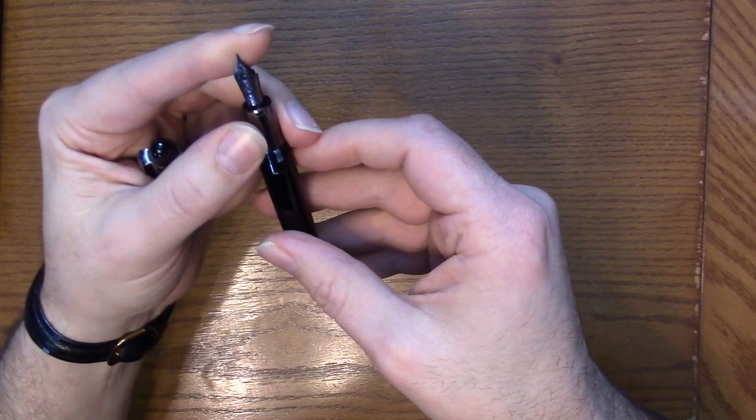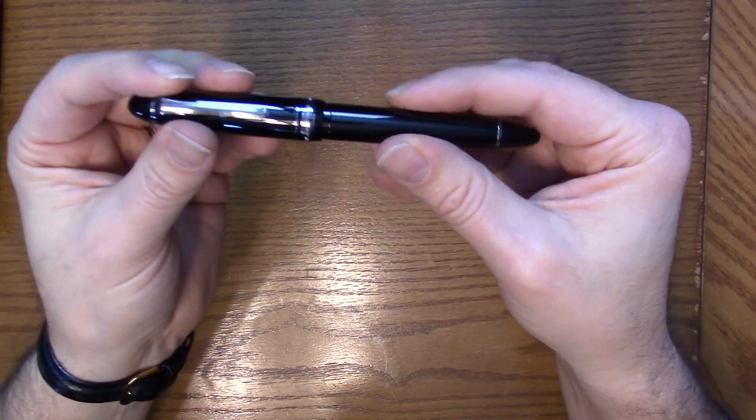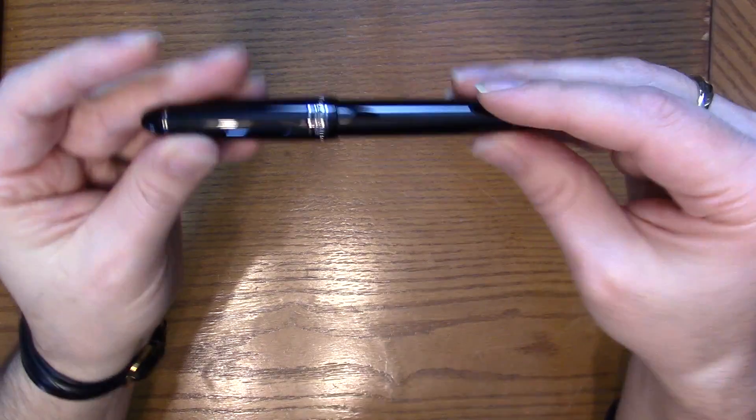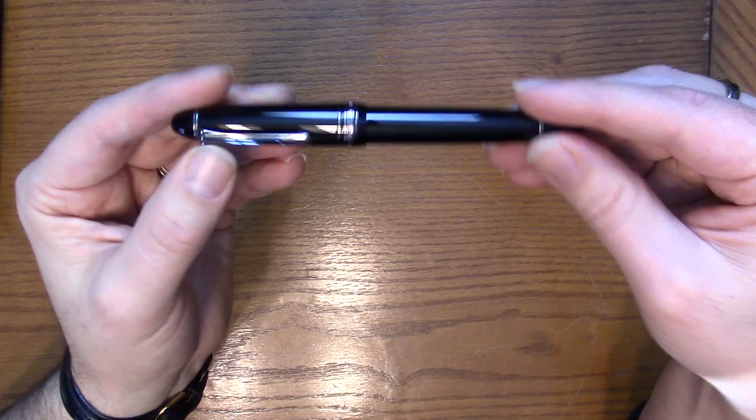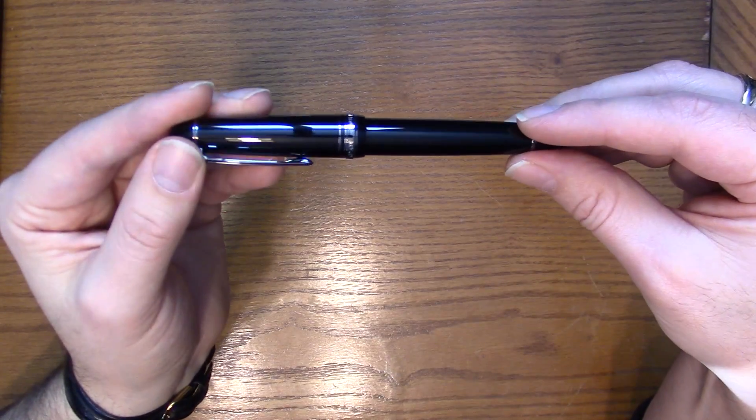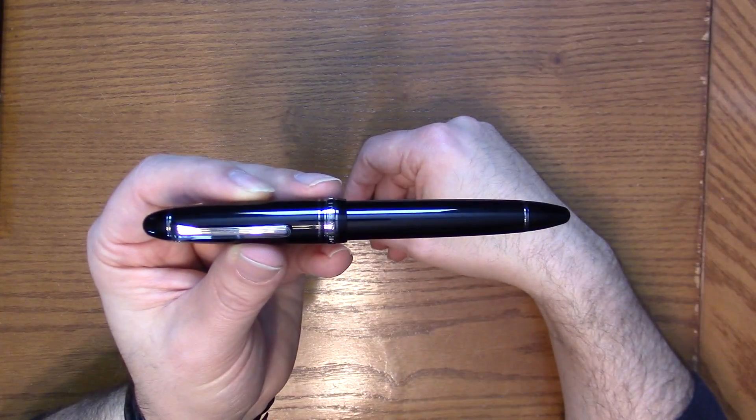Of course, great Sailor nibs. Comes in a couple of different options: extra fine, fine, medium. If you like the dark trim look but don't like the matte finish, this is a really great option.